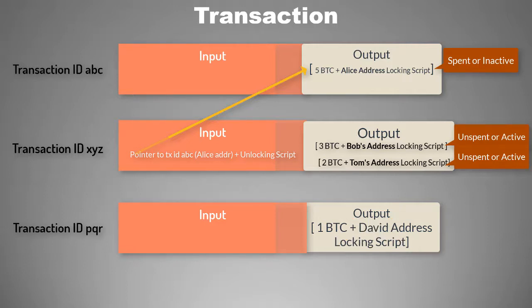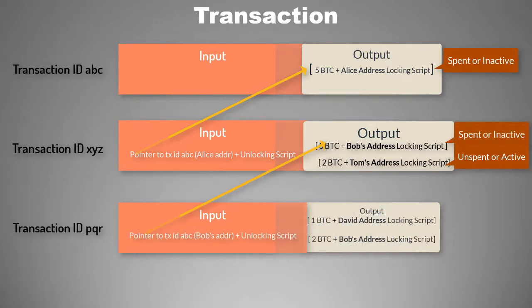In this transaction also there will be an input which will point to Bob's transaction output, and it will create two new transaction outputs: one with David's address having one Bitcoin and another transaction output with Bob's own address having two Bitcoins. So though Bob spent the entire three Bitcoin output, he retained two Bitcoins by creating an output to his own address.